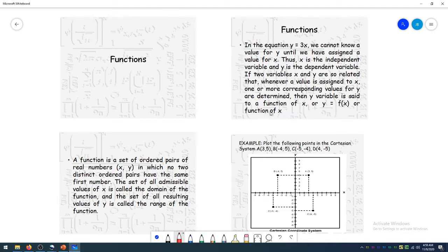Thus x is the independent variable and y is the dependent variable. If two variables, x and y, are so related that whenever a value is assigned to x, then there will be a value of y, then variable y is said to be a function of x, or y equals f of x.